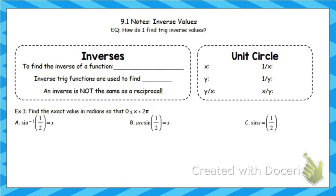What we're going to do today is find inverse values. It's going to be very similar to what we did when we found trig values in the unit circle, but the inverse. An inverse is when you switch x and y — that's how you find an inverse. We use inverse trig functions to find angles. The answer to an inverse trig is an angle. The way you type it in your calculator is shift sine with a little negative 1 superscript — that's inverse.